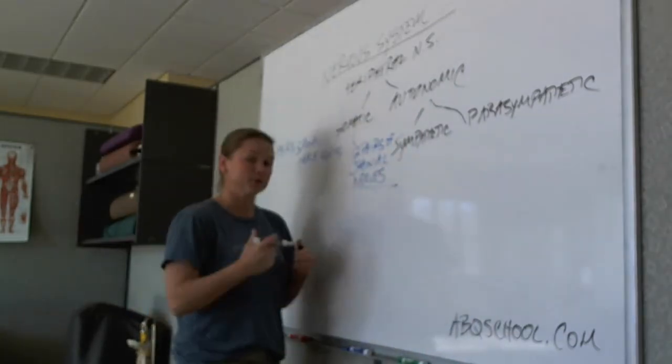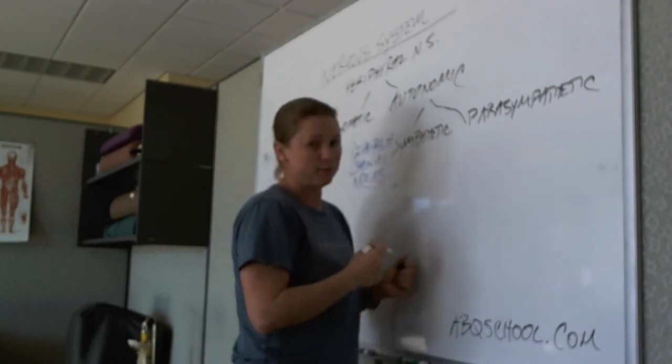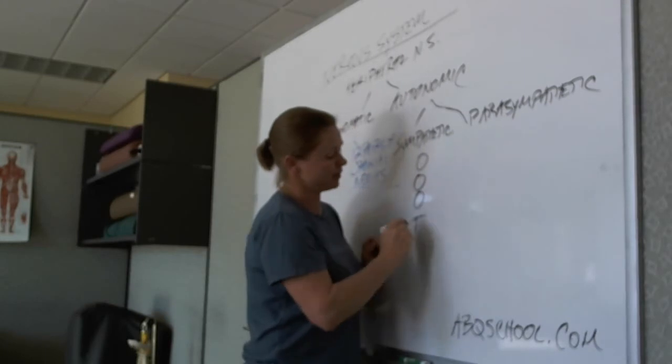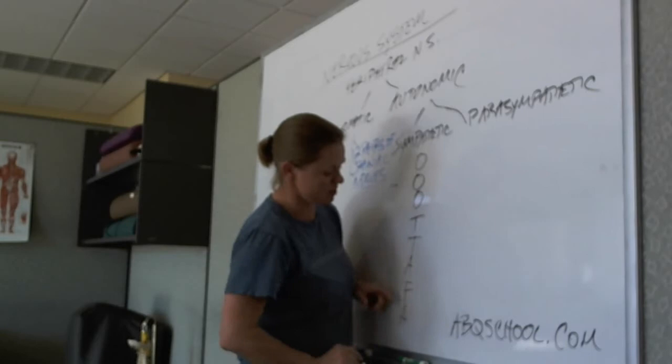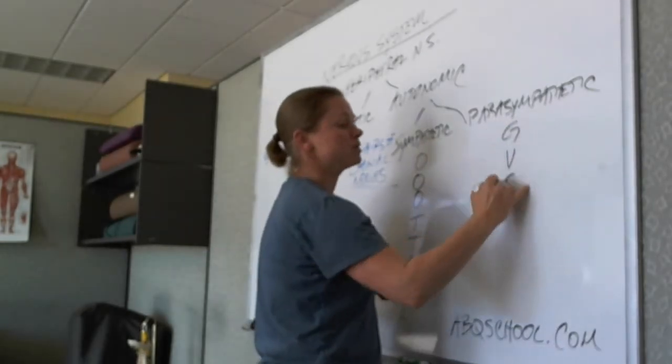We have 12 pairs of cranial nerves, so one for either side, and the easiest way to remember this, now you might want to write this down: on old Olympus's towering tops, a Finn and German, view some hops.